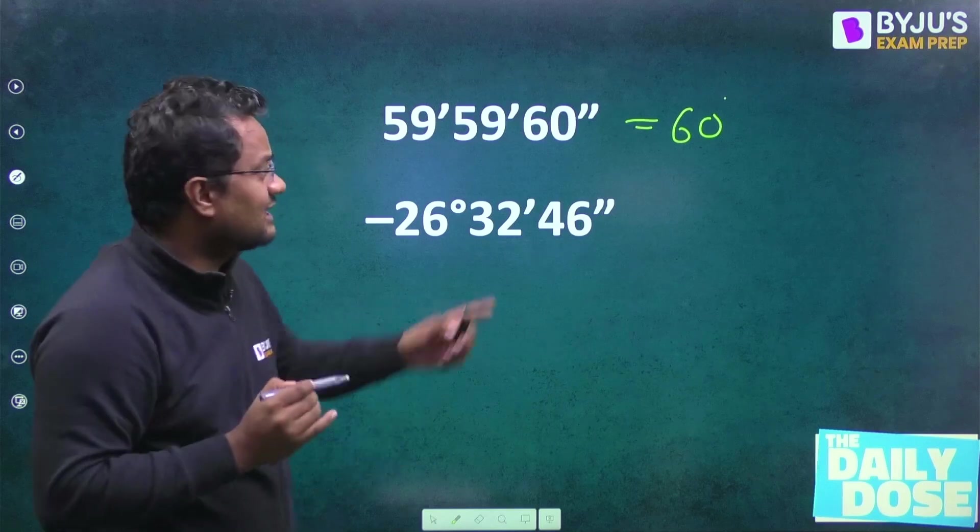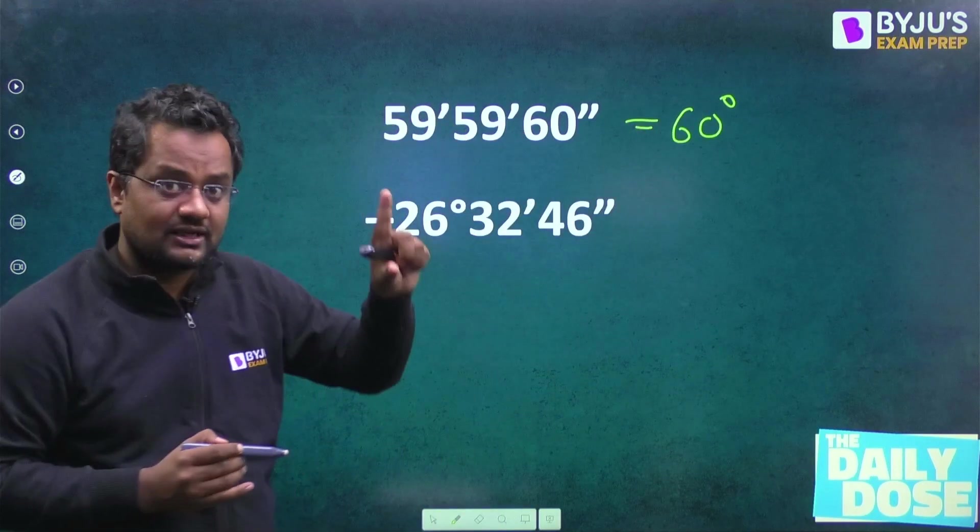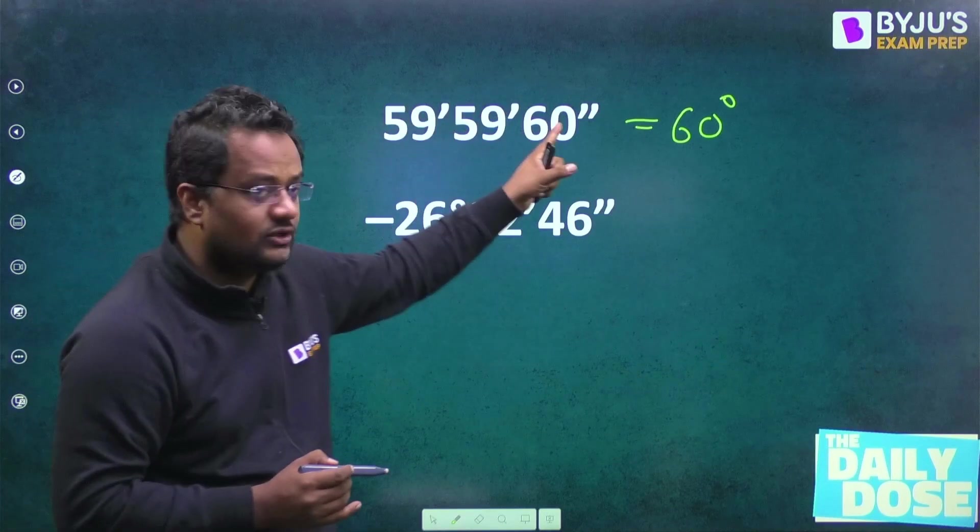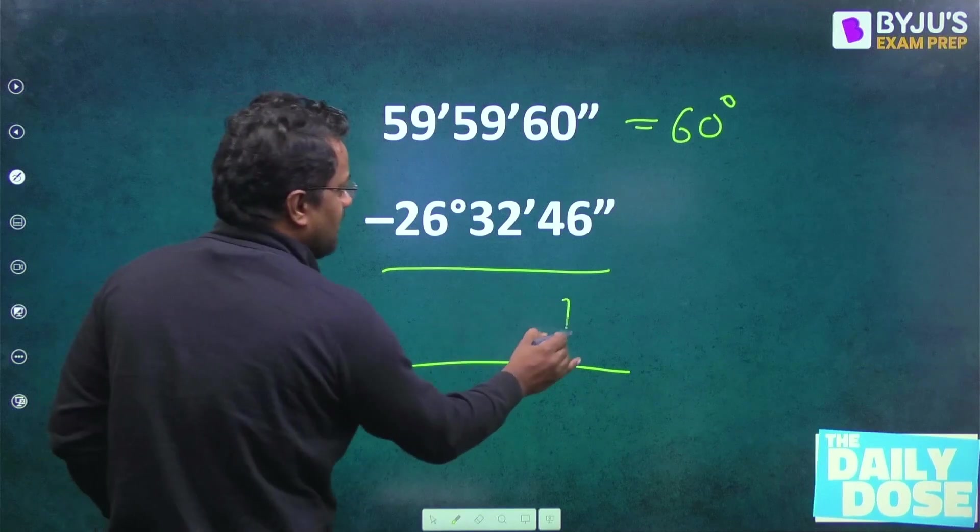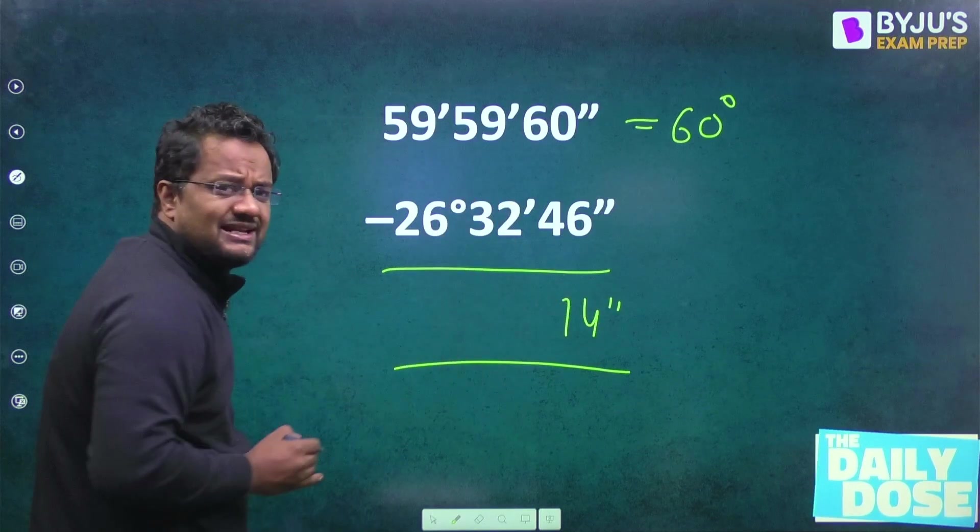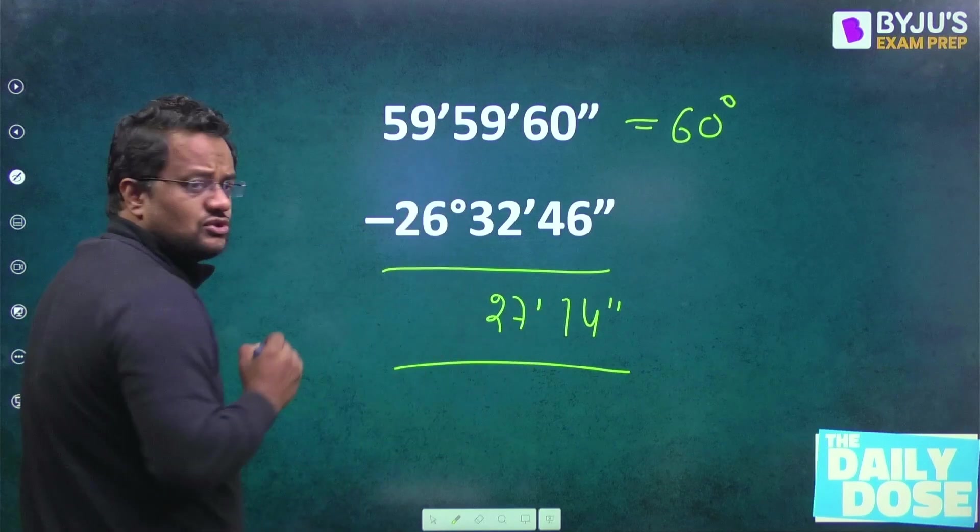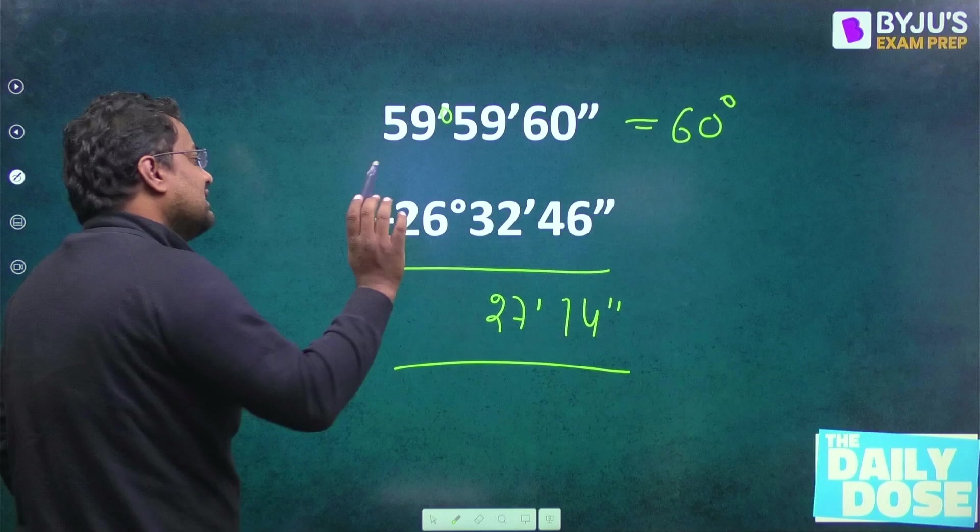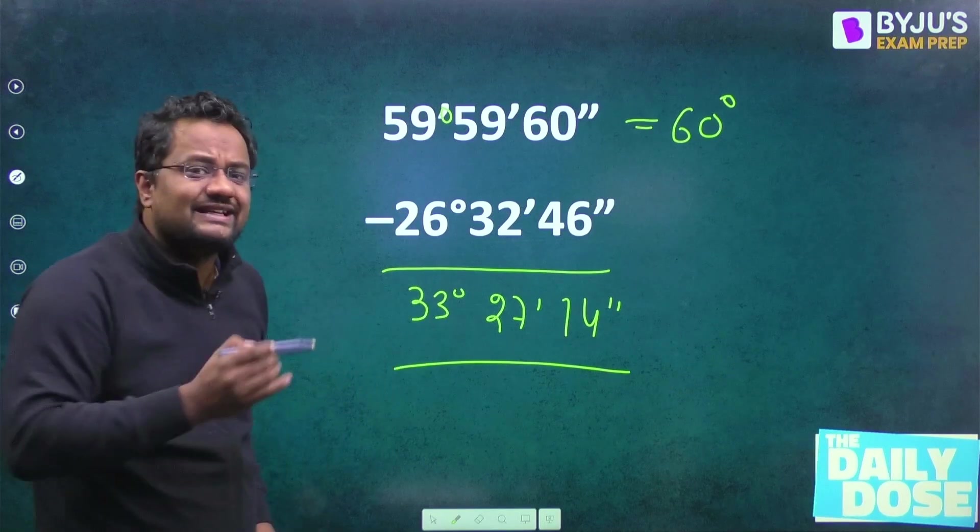60 seconds means one minute. One minute and 59 minute is 60 minute. 60 minute is one degree. 59 degree and one degree is 60 degree. So this is equivalent to 60 degree. And now the subtraction is very easy. 60 minus 46, it will be 14 seconds. 59 minus 32, it will be 27 minute. 59 minus 26 degree. So this will be 33. So like this, you can do it very easily and very fast.